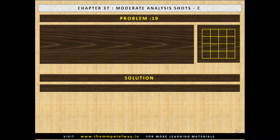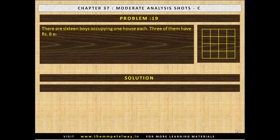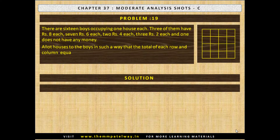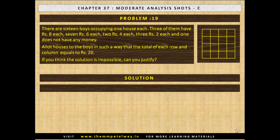Problem No. 19. There are 16 boys occupying one house each. Three of them have Rs. 8 each, 7 have Rs. 6 each, 2 have Rs. 4 each, 3 have Rs. 2 each and 1 does not have any money. Allot houses to the boys such that the total of each row and column equals Rs. 20. The solution is not possible; to justify, make possible combinations and check the requirement.